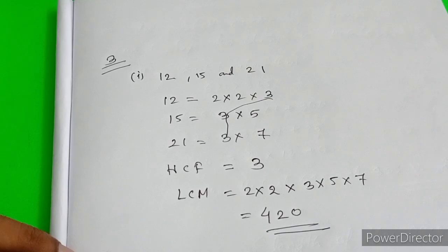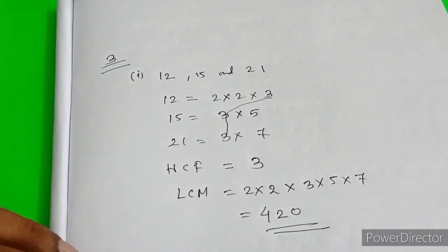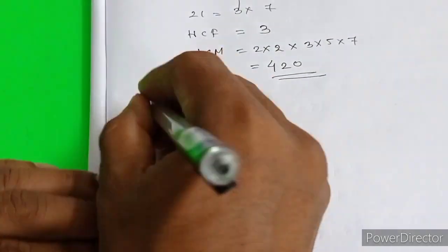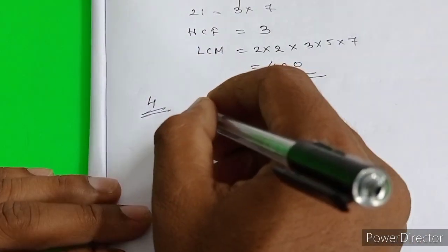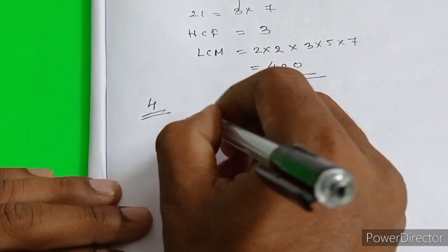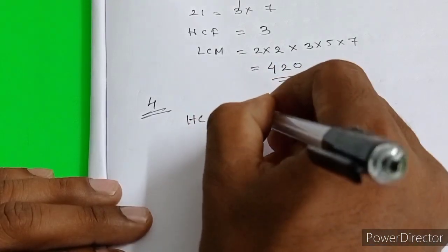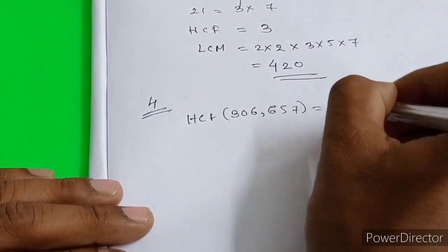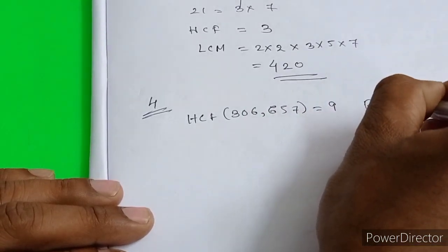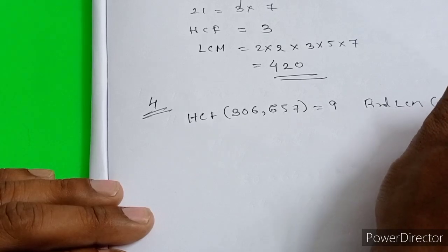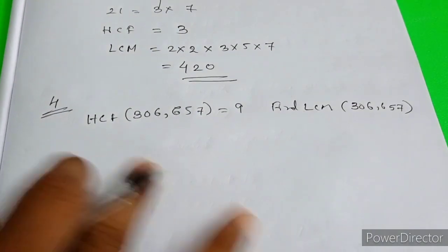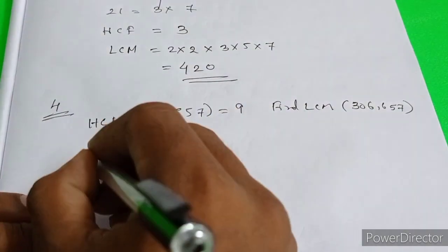Next, Question Number 4: Given that HCF of 306 and 657 equals 9, find LCM of 306 and 657. We need to find the LCM.